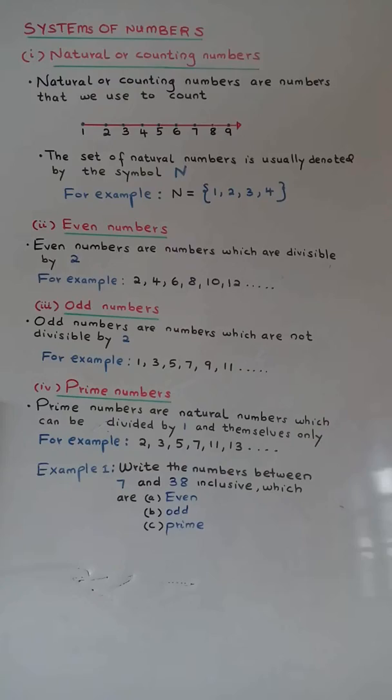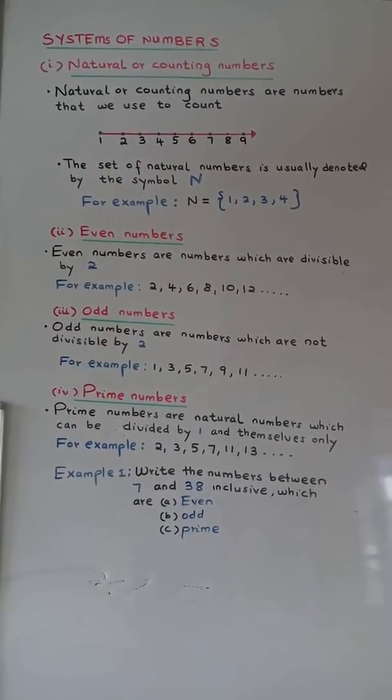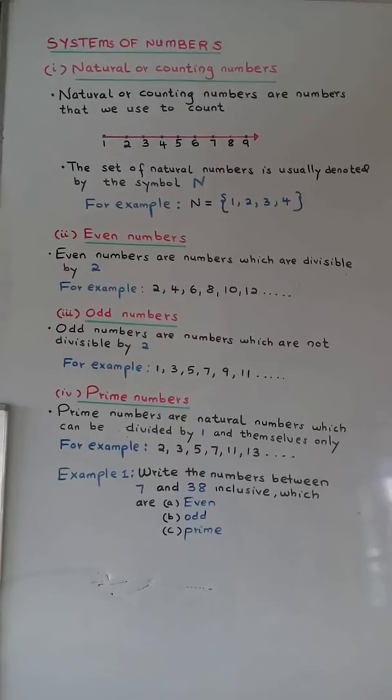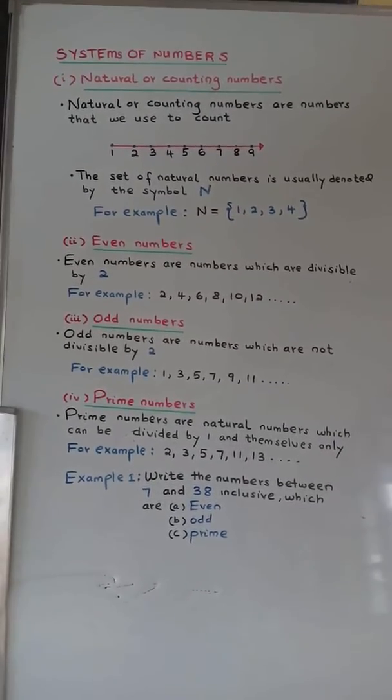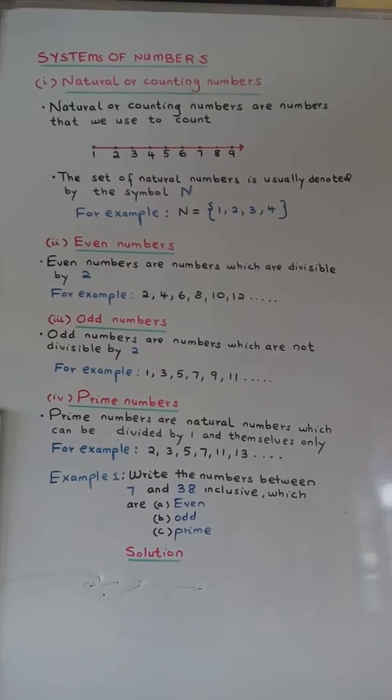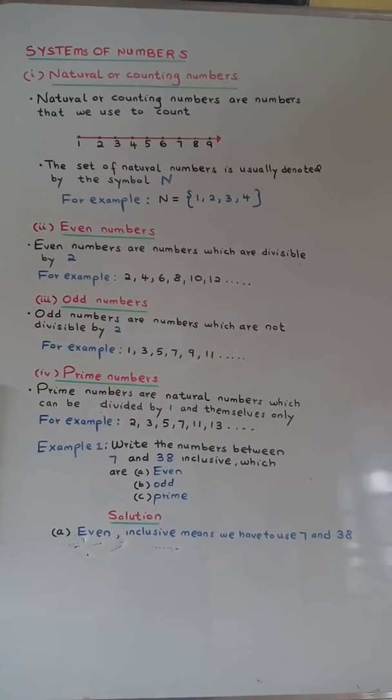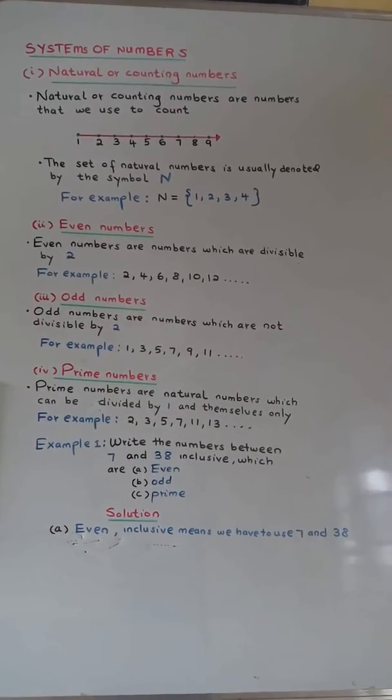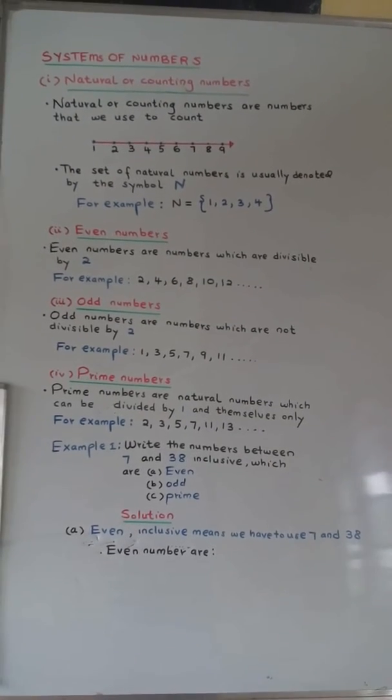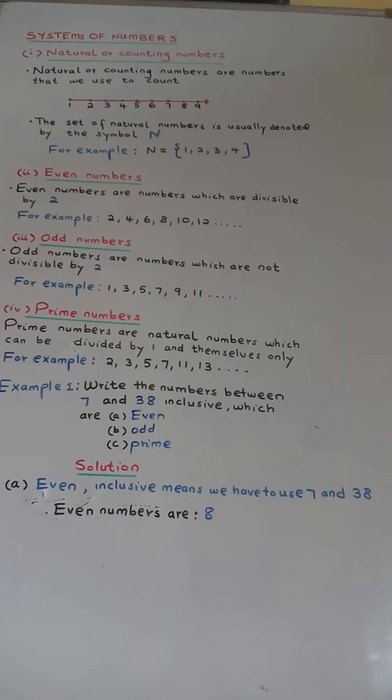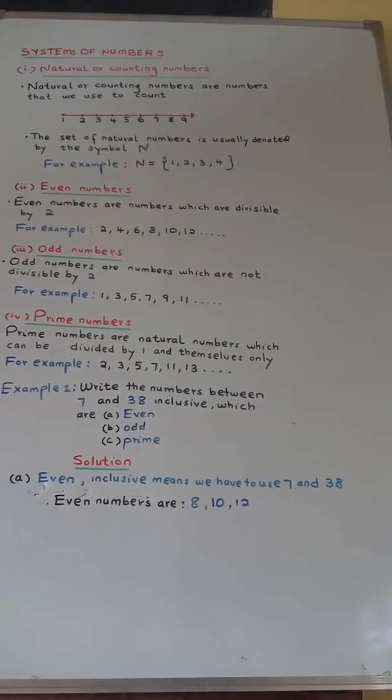Example number one. Write the numbers between 7 and 38 inclusive which are: (a) even, (b) odd, (c) prime. Solution. (a) Even. Inclusive means we have to use 7 and 38. Then even numbers are: 8, 10, 12